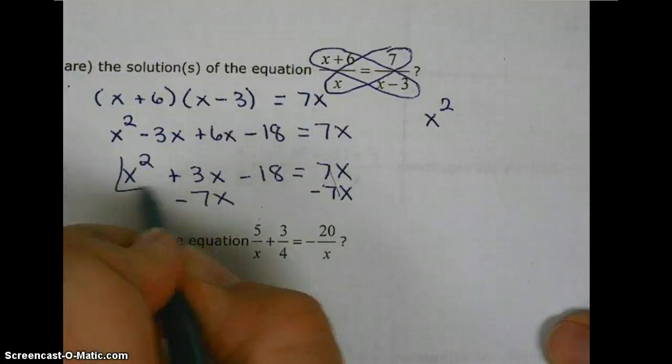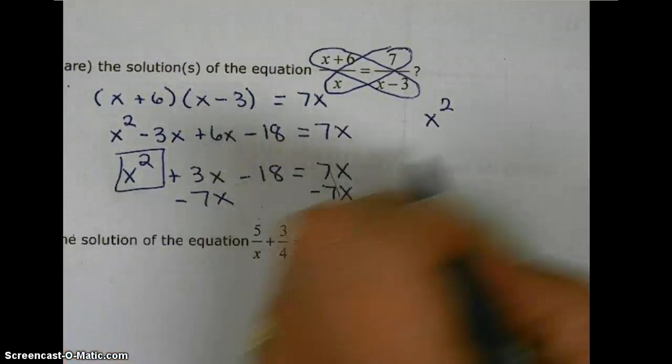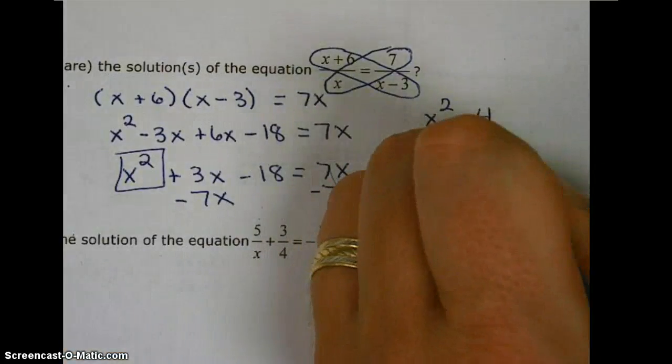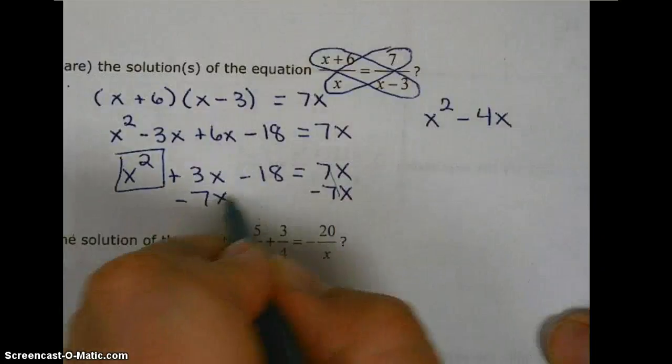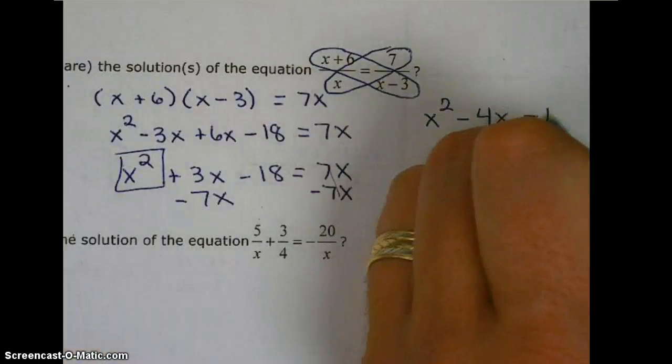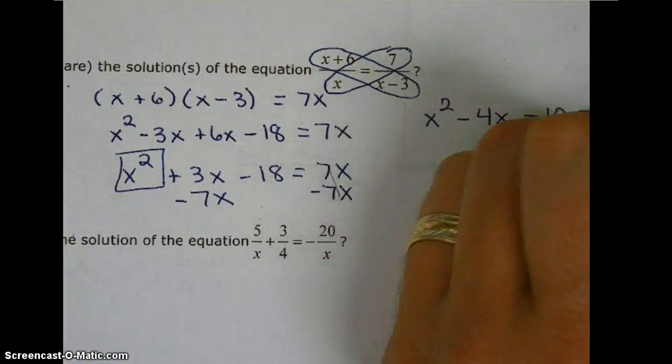x squared, 3x minus 7x, negative 4x, minus 18, equals 0.